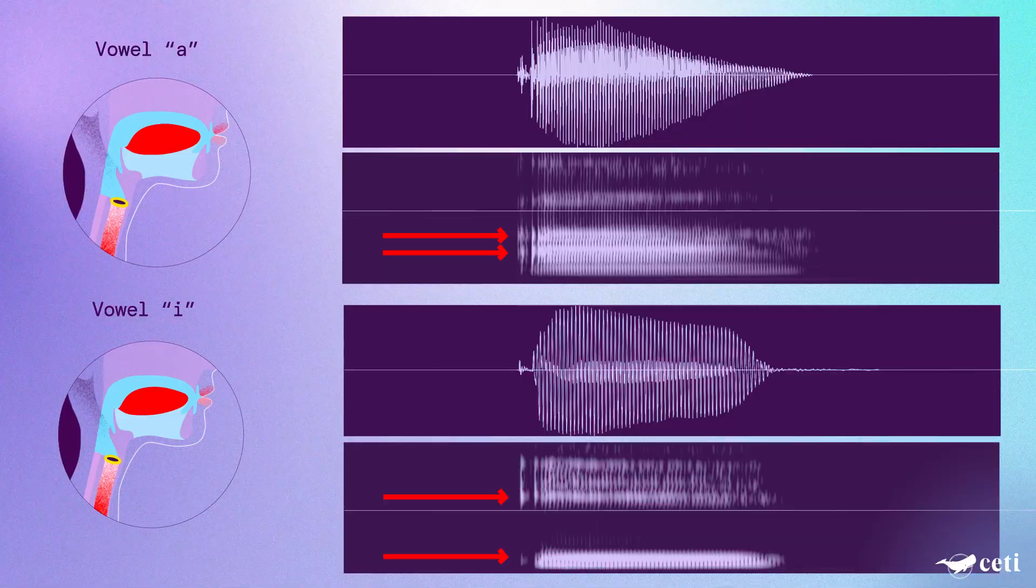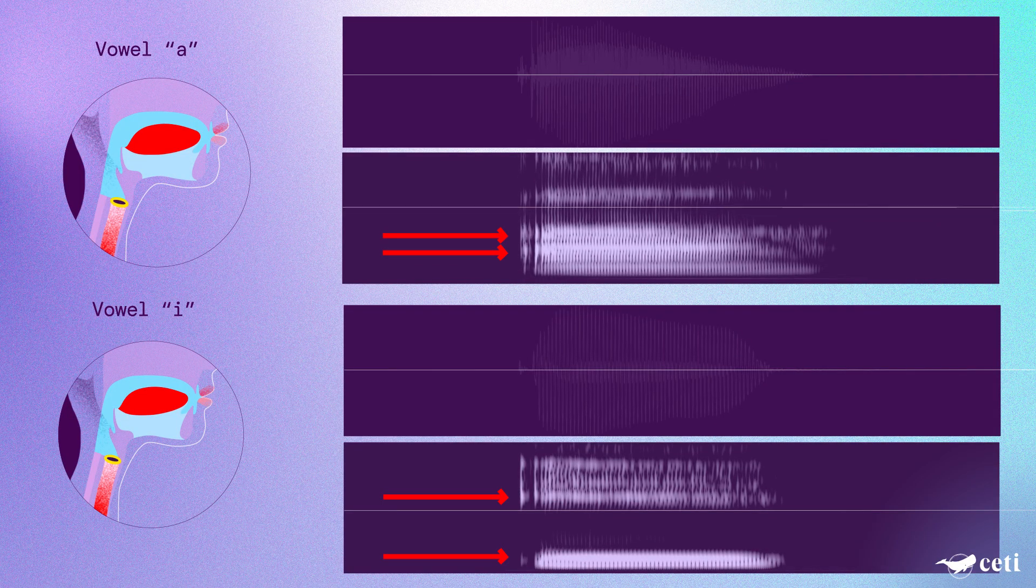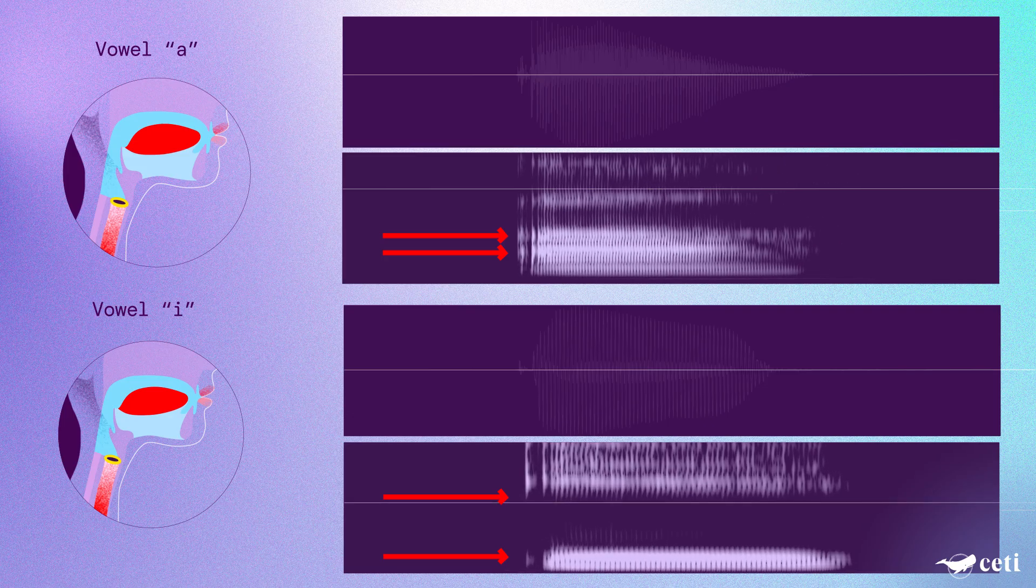These different mouth shapes result in different resonant frequencies, or these shadowed bars. For A, the bars are close together. For I, they are far apart.